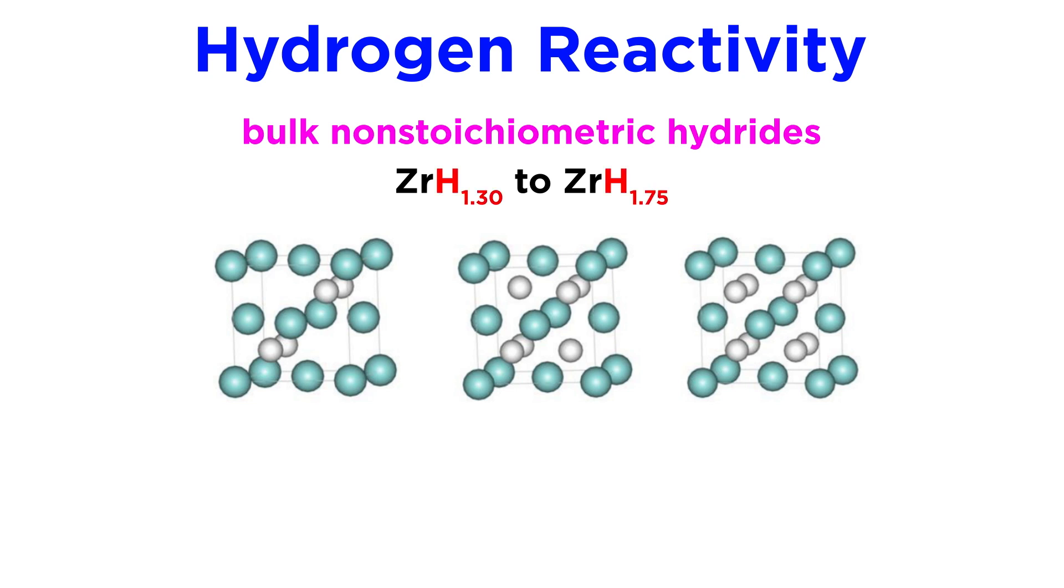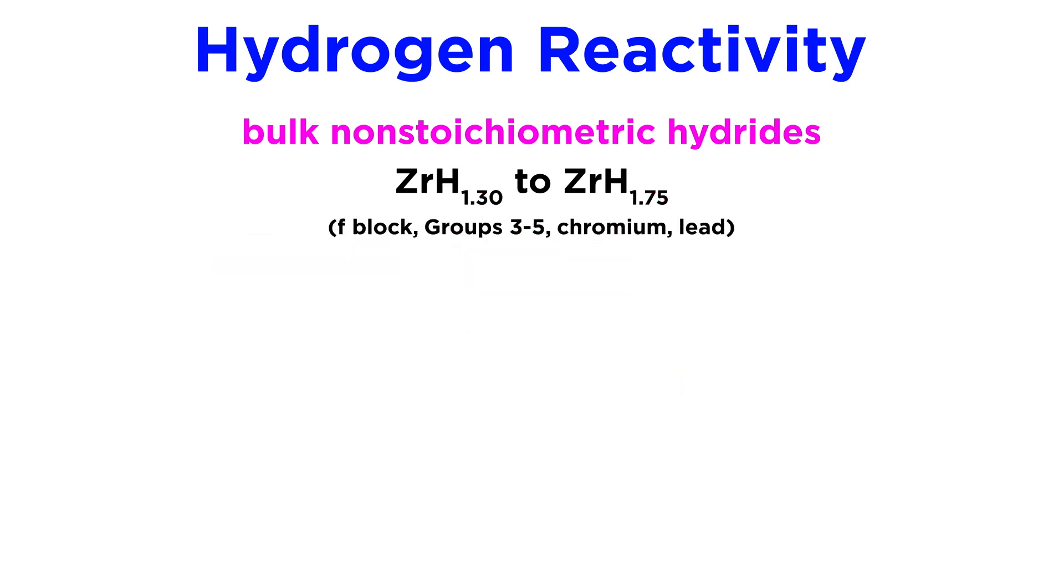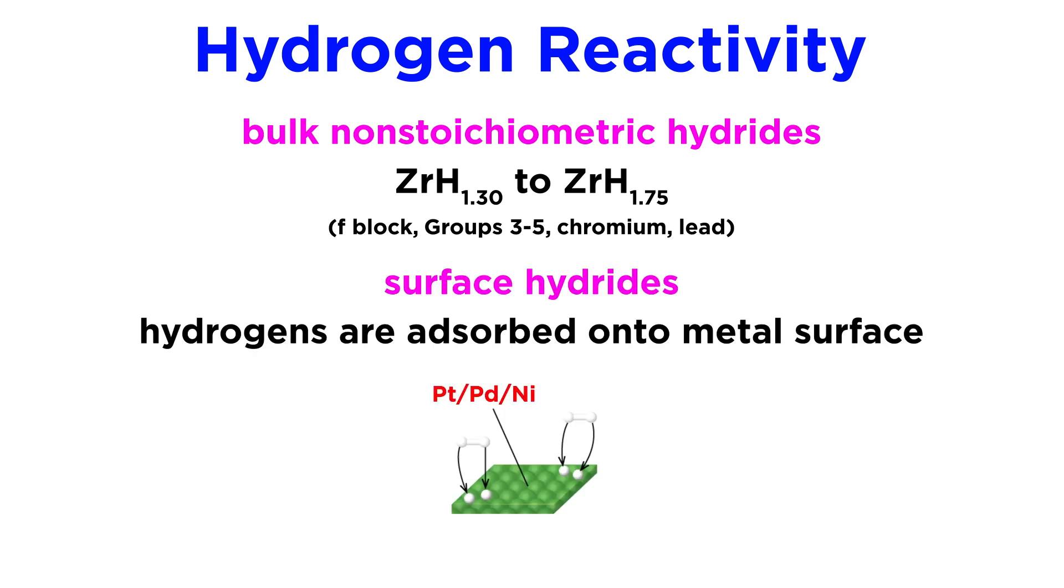sometimes even in non-integer ratios. This works with all F-block metals, as well as D-block metals from groups three to five, as well as chromium and lead.